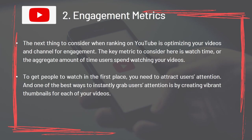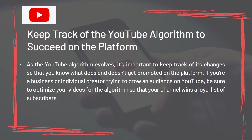For engagement metrics, the key metric to consider is watch time — the aggregate amount of time users spend watching your videos. To get people to watch in the first place, you need to attract users' attention, and one of the best ways is by creating vibrant thumbnails. As the YouTube algorithm evolves, keep track of its changes so you know what does and doesn't get promoted on the platform, and optimize your videos for the algorithm to win a loyal list of subscribers.